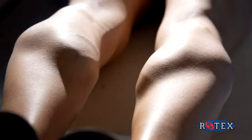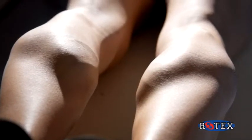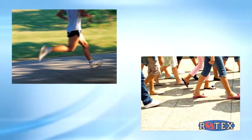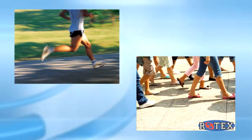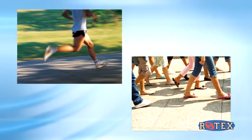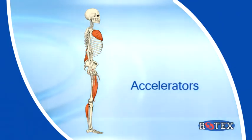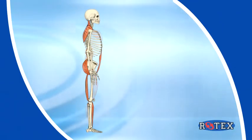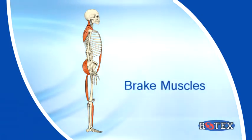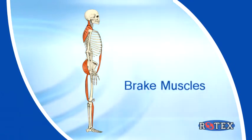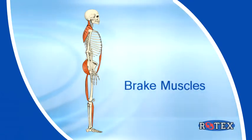There are muscles in the body whose primary job is to start an action. We call those the accelerators. It may be a fast action like running or a slow action like walking, but the point is they start the action. So we will call these muscles the accelerators, just like the accelerator pedal in your car. Directly opposite these accelerator muscles are the muscles that help stop the action. So we call these the brake muscles, just like your car's brake pedal.